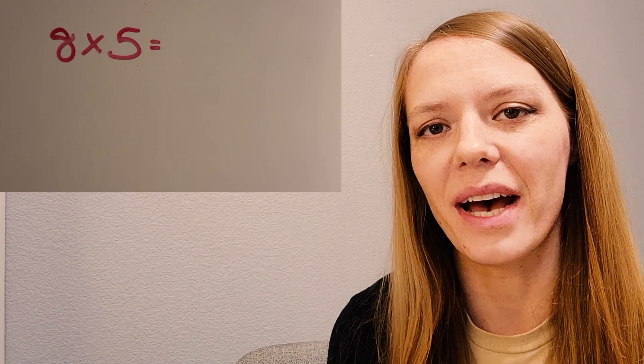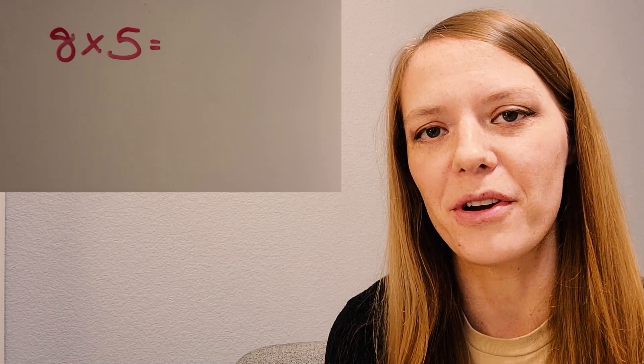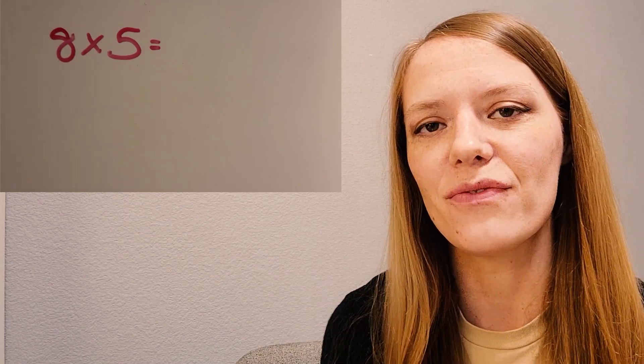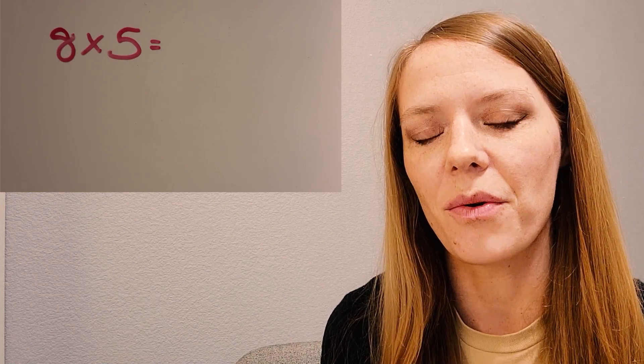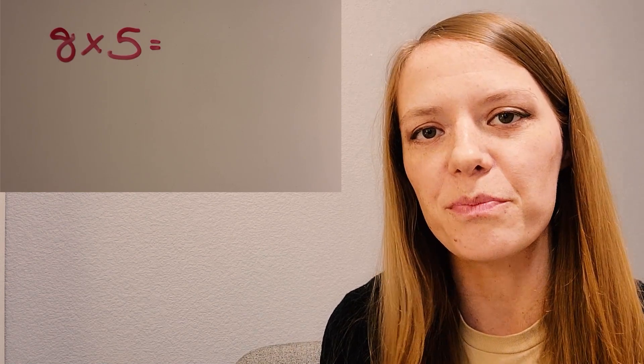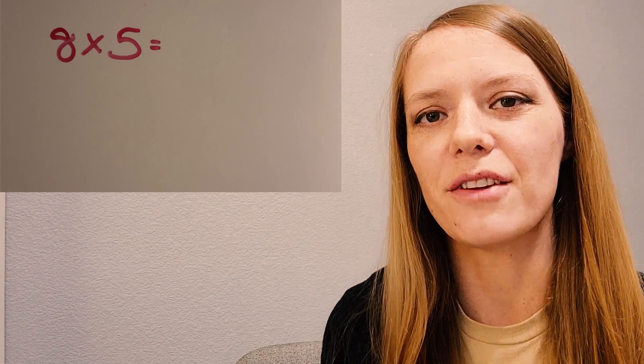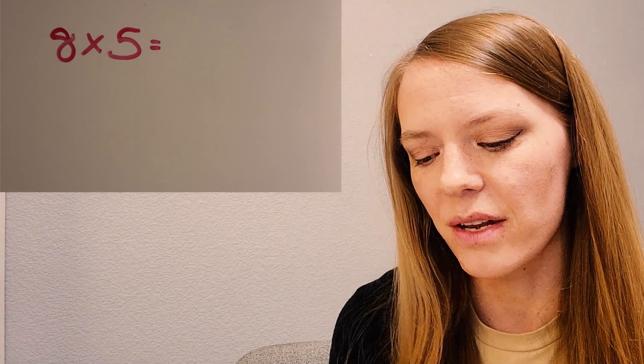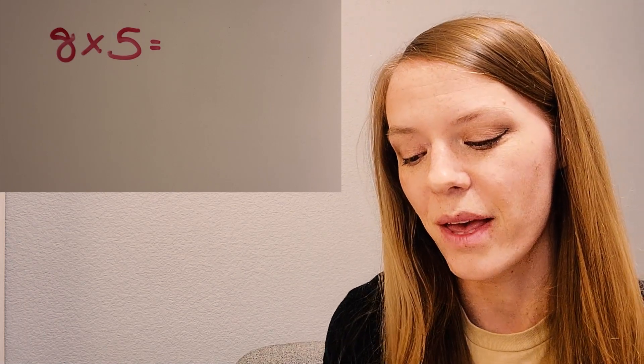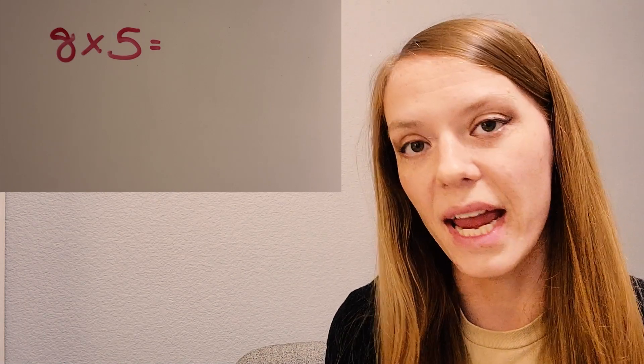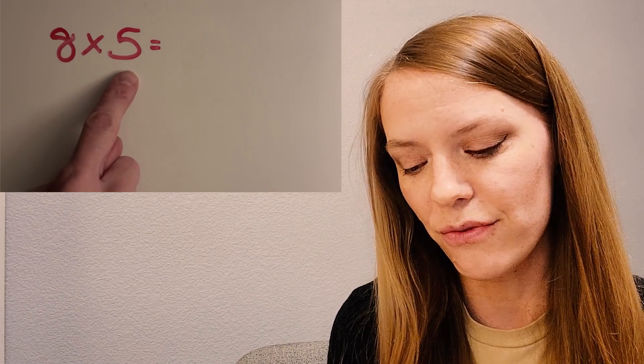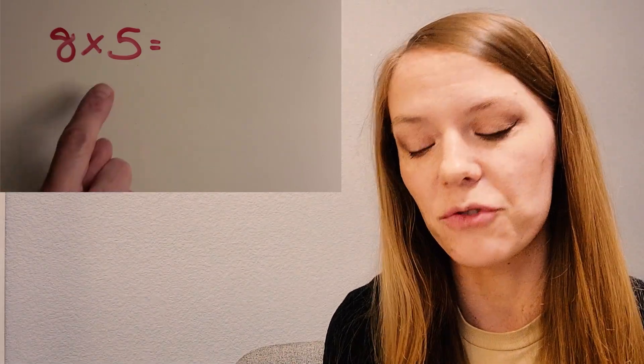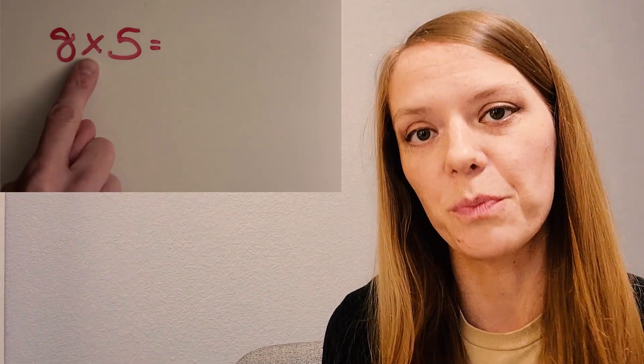All right, so the first one I want to look at is 8 times 5. Let's get that on our whiteboard and let's first just figure out what that equals. So I'm going to be using some equal group drawings that I think are really easy to find answers and we can think about this one two different ways. So we can think about drawing eight groups of five or we can think of drawing five groups of eight.